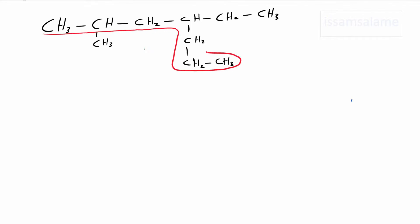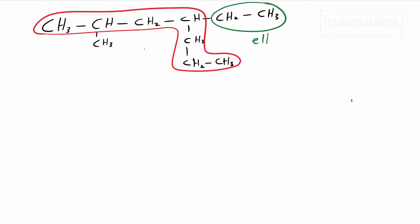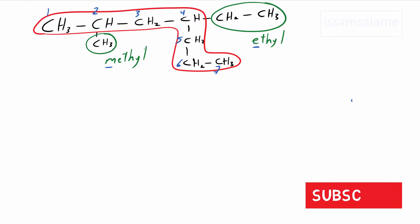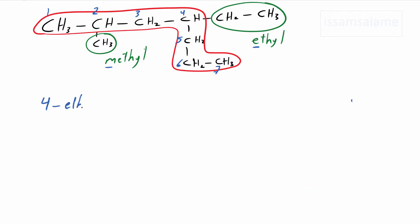Let's have a third example where the groups are different. The longest chain is composed of seven carbon atoms. We have two groups: one made of two carbon atoms in sequence — called ethyl — and the other made of one carbon atom — called methyl. We start numbering from the left end since it's closer to the groups. When we have two different groups, we name them in alphabetical order regardless of location. So we name ethyl at carbon 4, then methyl at carbon 2. The parent chain is heptane: 4-ethyl-2-methylheptane.